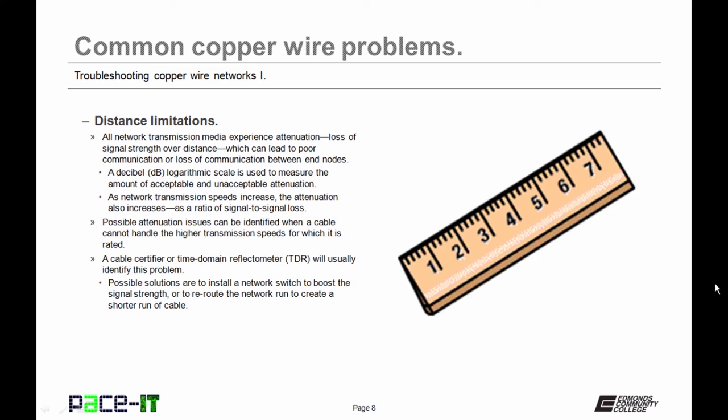Possible attenuation issues can be identified when a cable cannot handle the higher transmission speeds for which it is rated. A cable certifier or TDR will usually identify this problem. Possible solutions are to install a network switch to boost the signal strength or to reroute the network run to create a shorter run of cable.